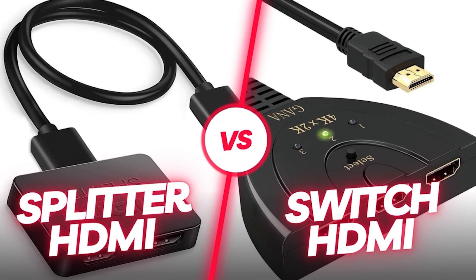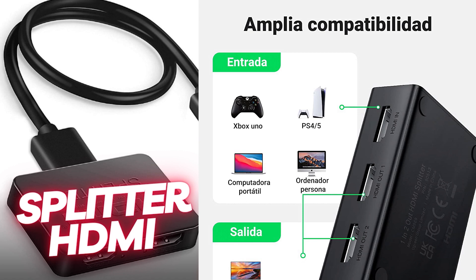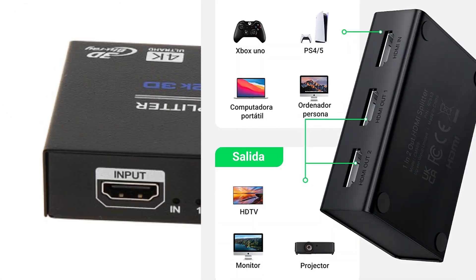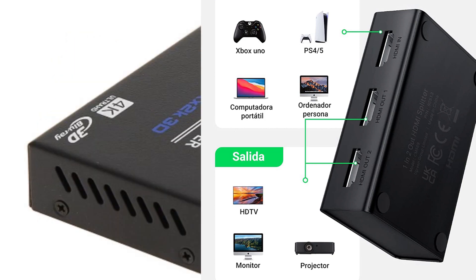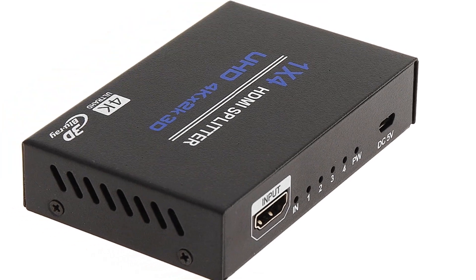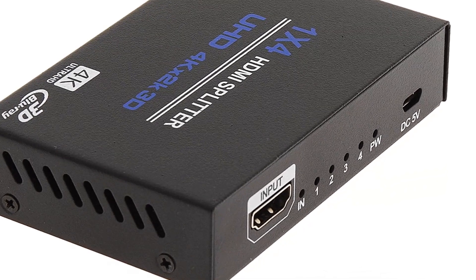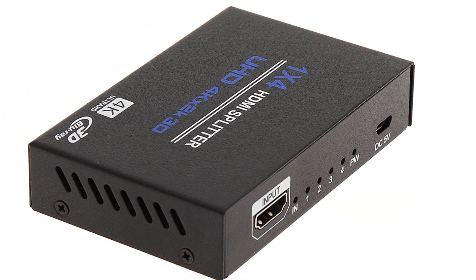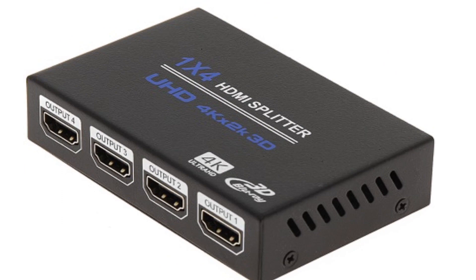HDMI splitter versus HDMI switch. An HDMI splitter is a device that allows you to split one HDMI signal into multiple output signals. This means that you can connect one source device, such as a Blu-ray player or gaming console, to the splitter's input port and then connect multiple displays, such as TVs or monitors, to the splitter's output ports. The splitter duplicates the HDMI signal.